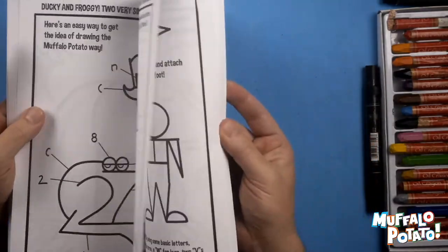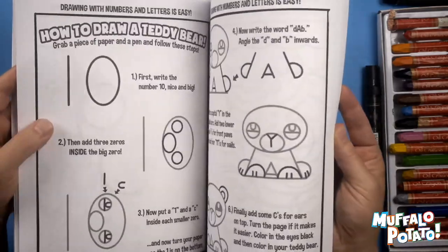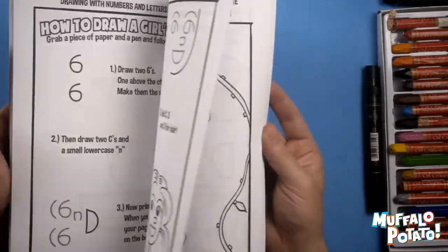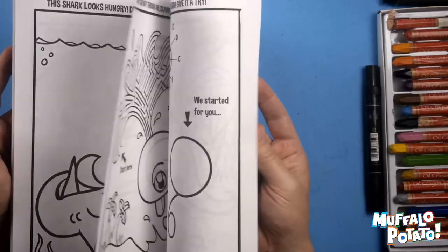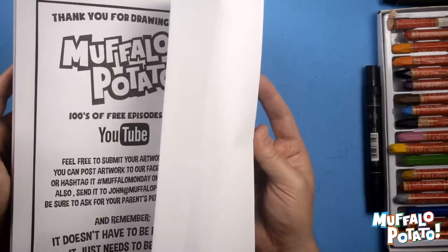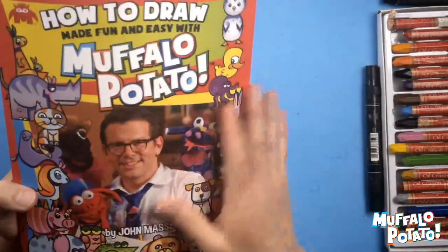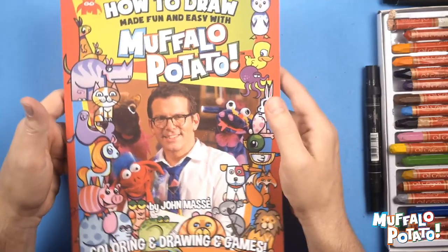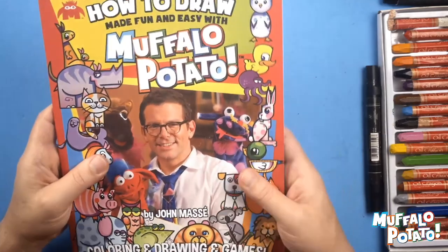So it's nice paper with a whole bunch of cool step-by-step instructions, neat drawing tips. There's puzzles you gotta work out, mazes, dinosaurs, all kinds of fun things. The Muffalo Potato coloring and drawing and activity and games book available at barnsandnoble.com. Very excited!